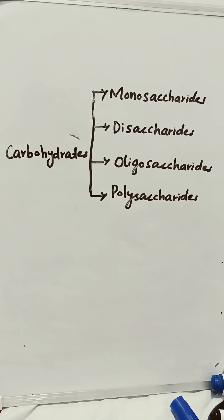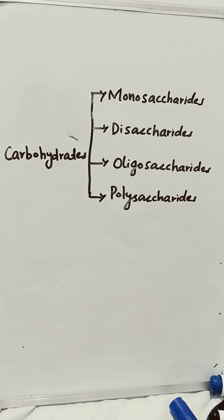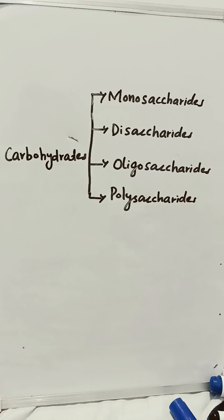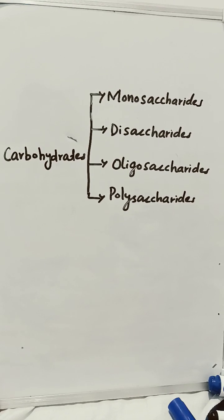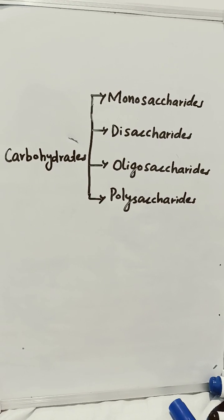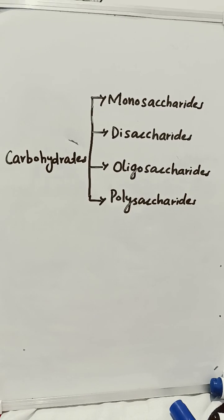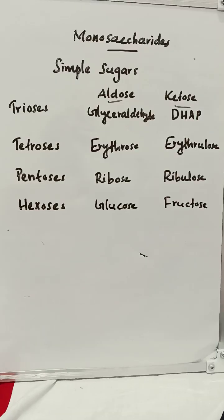Based on the number of monomer units or sugar units present and the degree of their polymerization, carbohydrates are classified into monosaccharides, disaccharides, oligosaccharides, and polysaccharides.